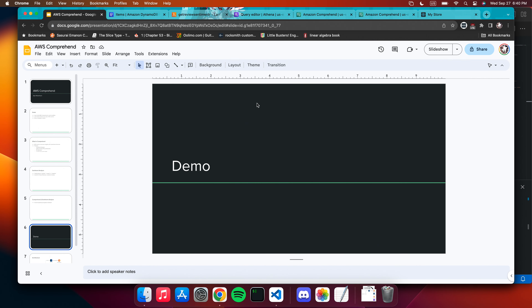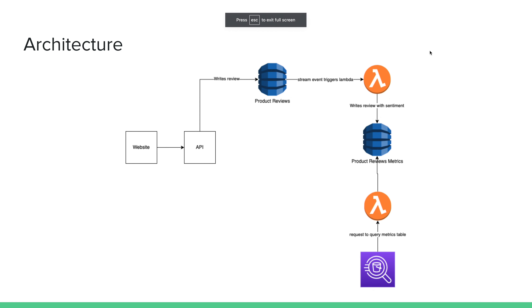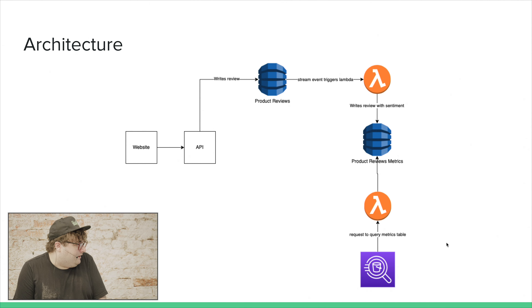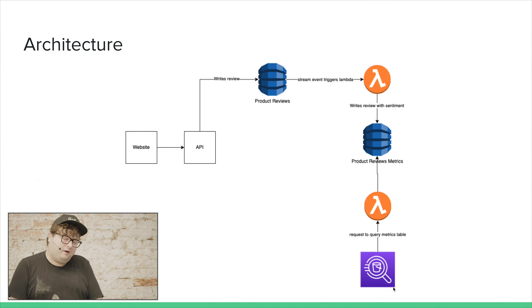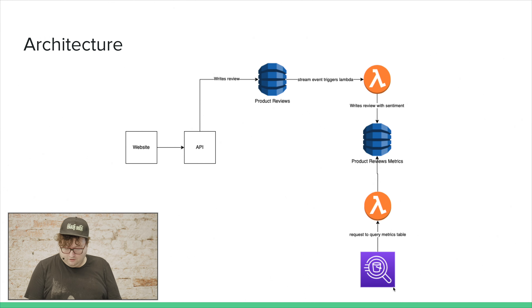I did a little setup here to simulate a pipeline for doing this asynchronously. Let me give an overall architecture. We have this website which talks to an API — that's the storefront. It writes reviews to a DynamoDB product review table. When something is written, it triggers a DynamoDB stream event that goes to a Lambda that calculates the sentiment and then writes that to a metrics table. I also have Athena set up so we can query the data SQL-like.